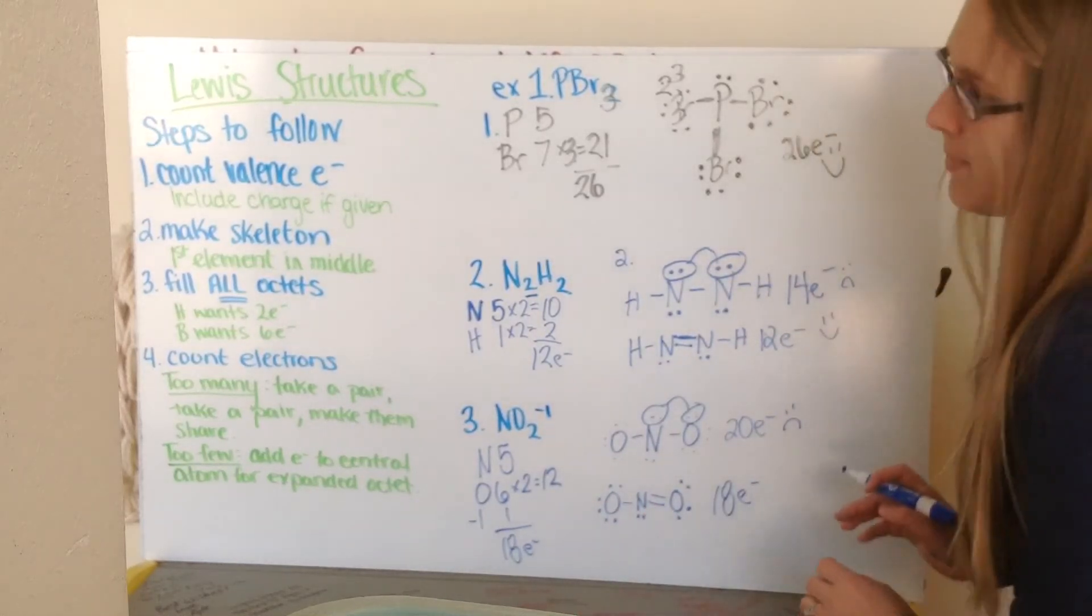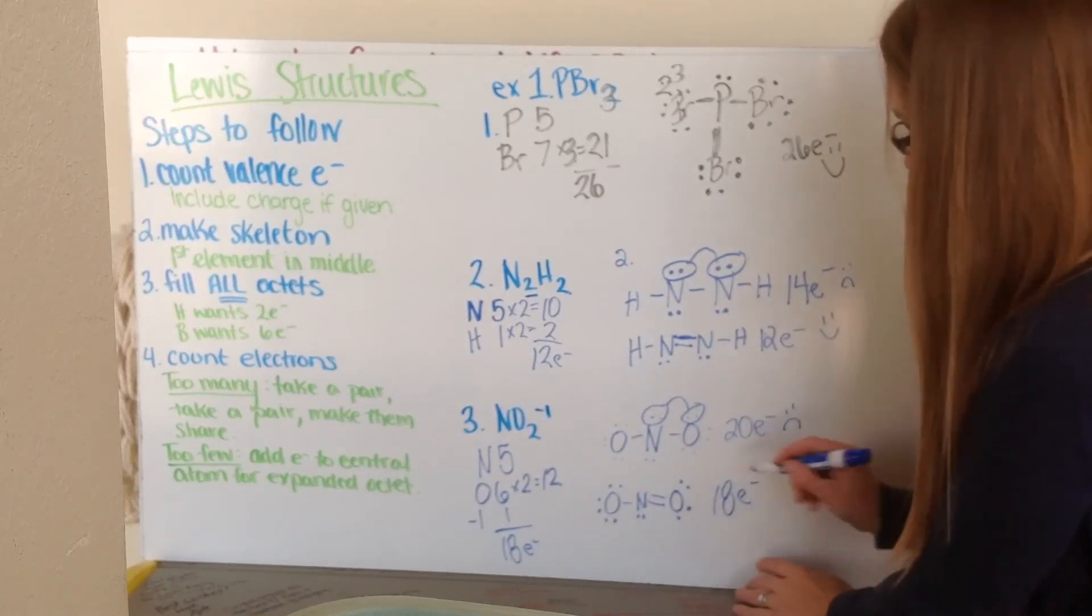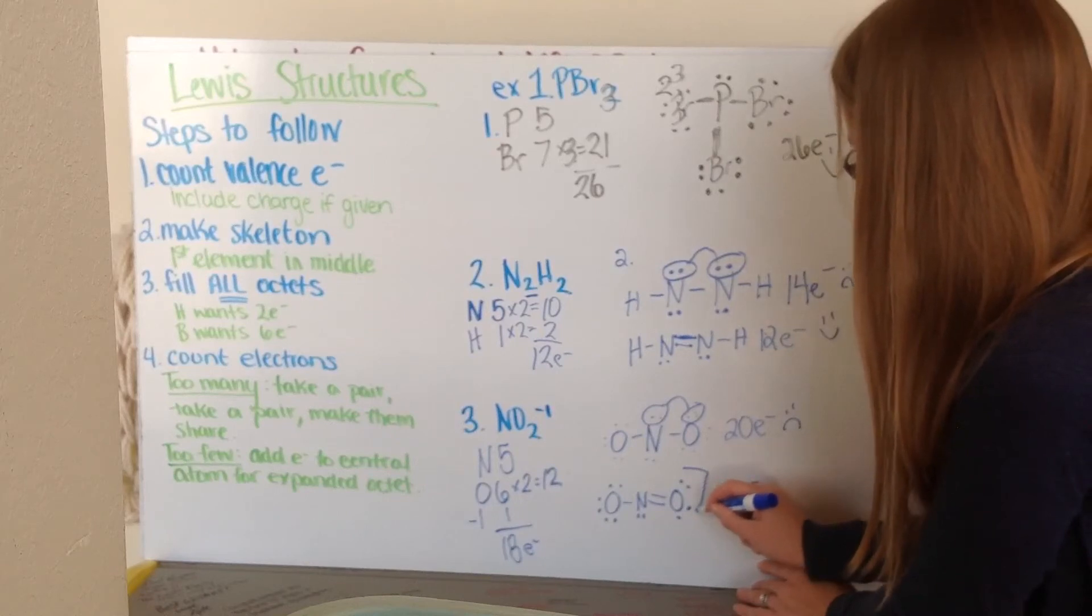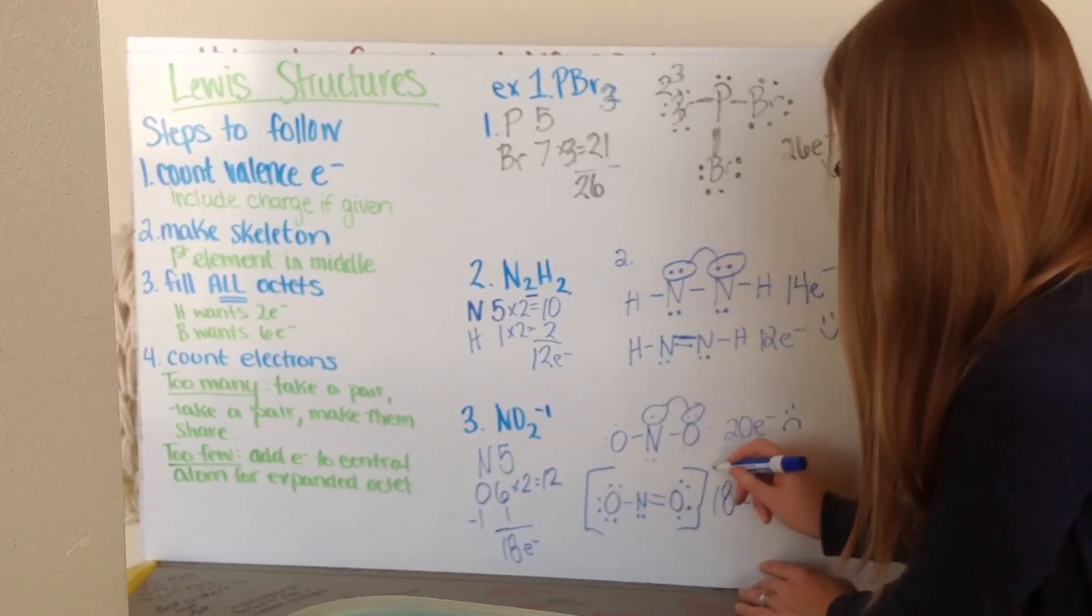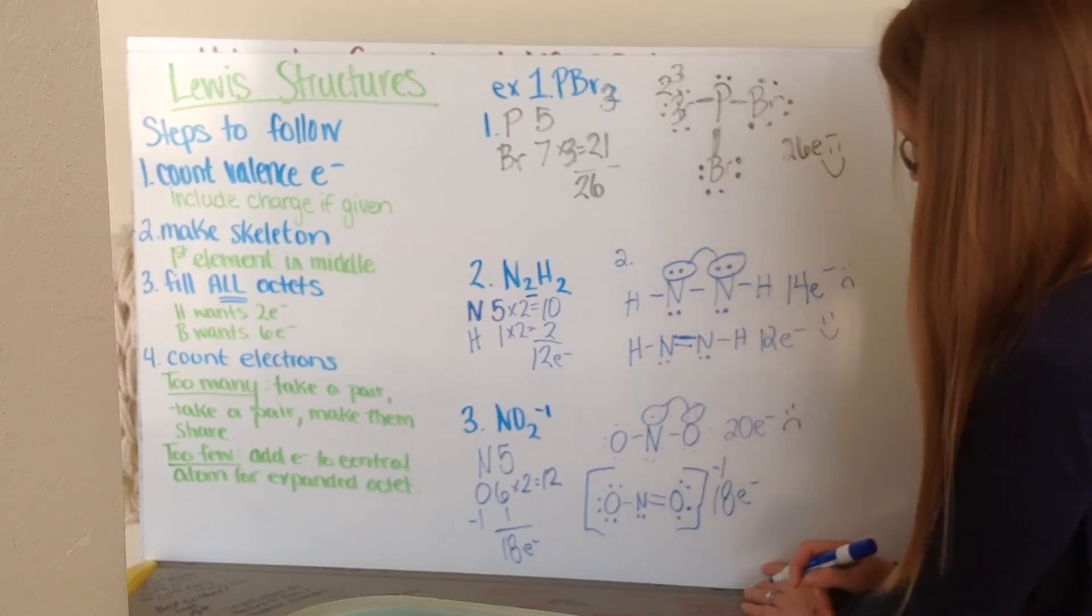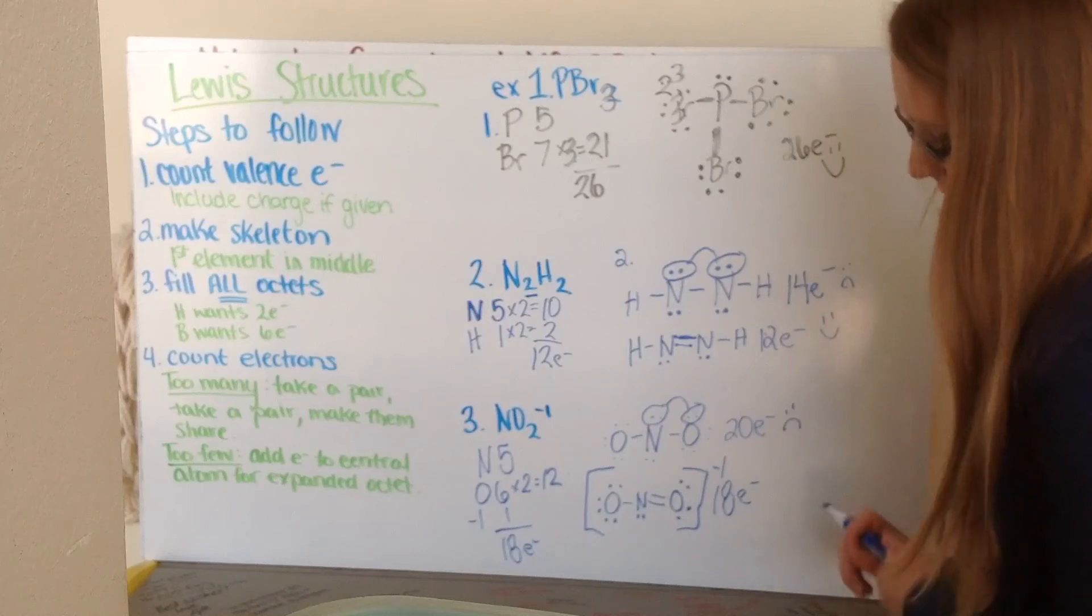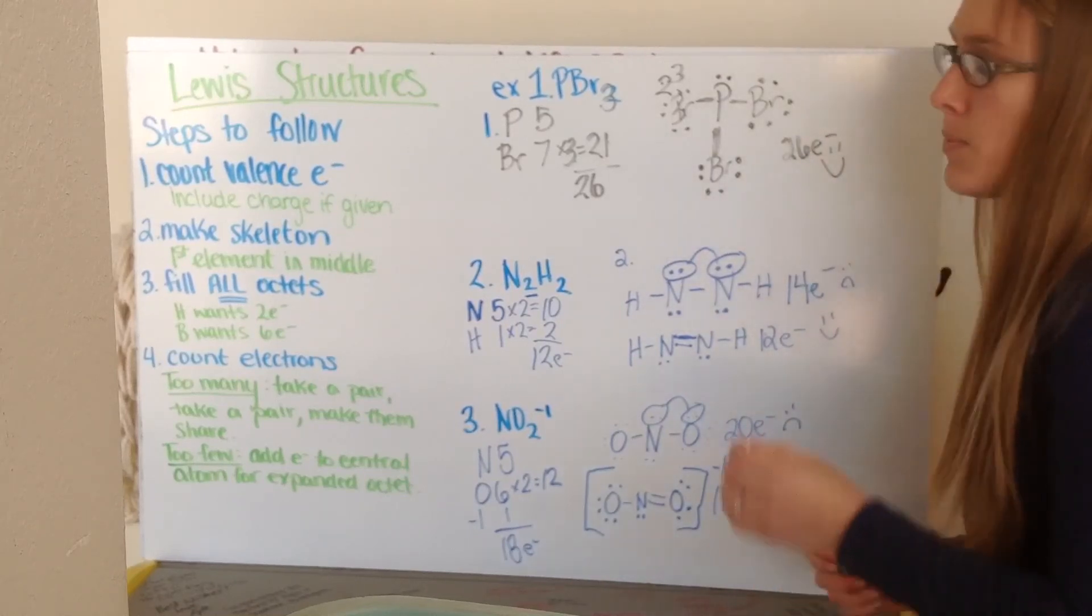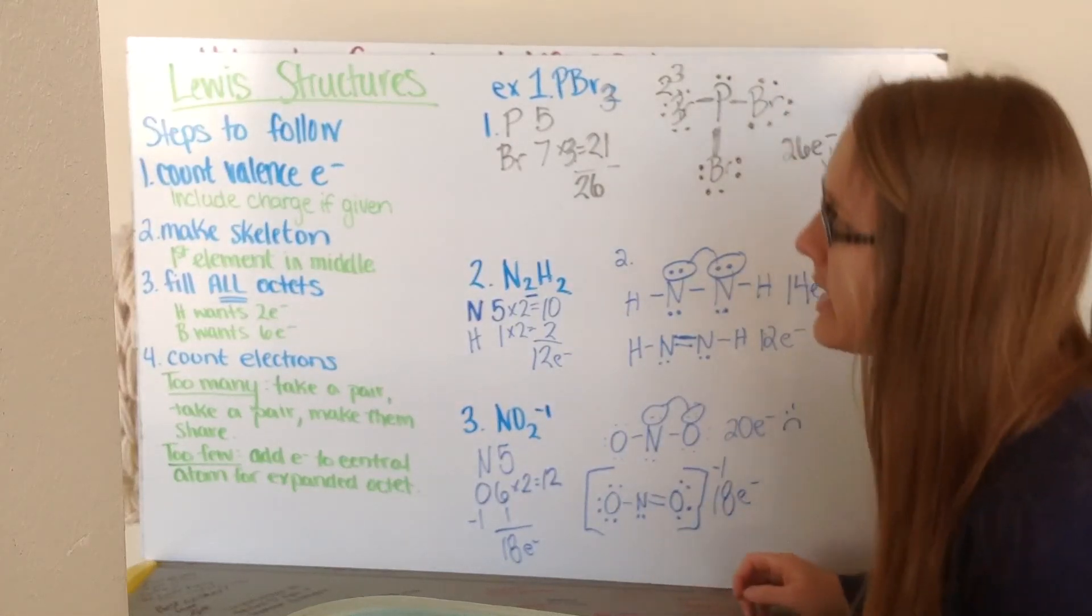And there's one more step now. Since I had a charge here, I need to again let my audience know that I have a charge on my molecule as well. So I put brackets around it like this. And I just write negative 1 off to the side. So that way I know that I had to add an electron in order to make this molecule happen. The other examples on your sheet I'd like you to try. And we're also going to go over those in class tomorrow.